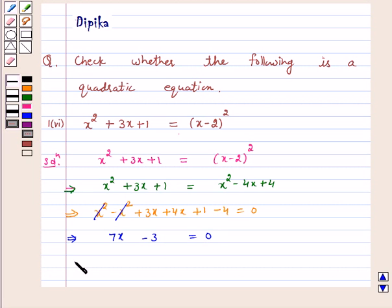Again, we can rewrite this as 0 times x squared plus 7x minus 3 equals 0. Note, here a equals 0.